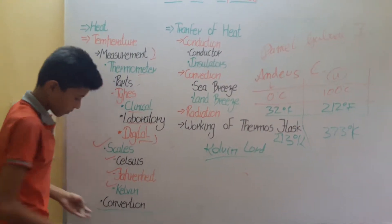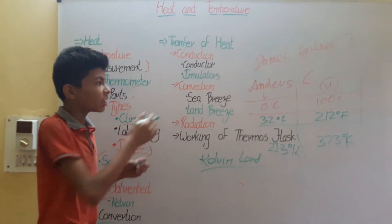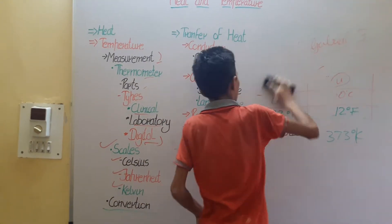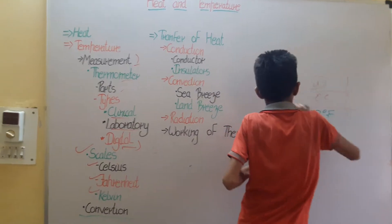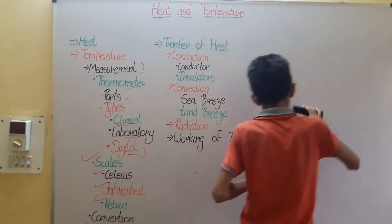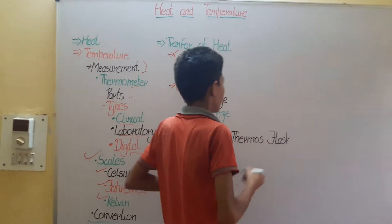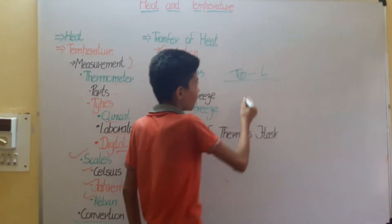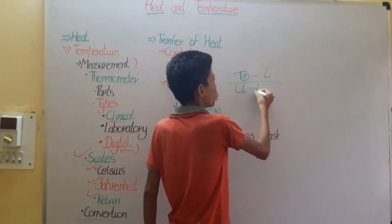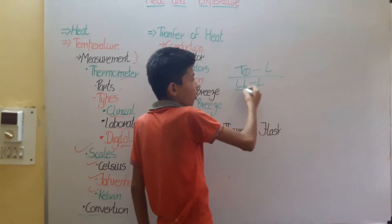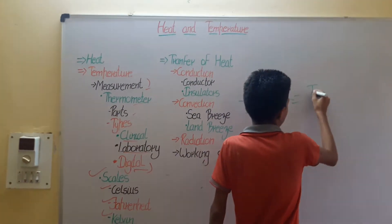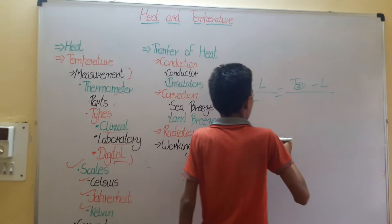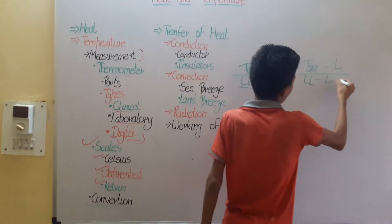Then we have the conversion of these scales into each other. We use a formula derived from a small table. The formula is: (Temperature of scale 1 minus lower temperature) divided by (upper temperature minus lower temperature) equals (temperature of scale 2 minus lower temperature) divided by (upper temperature minus lower temperature).